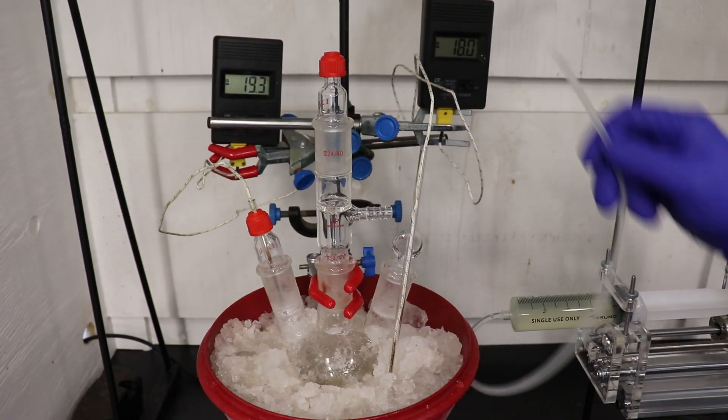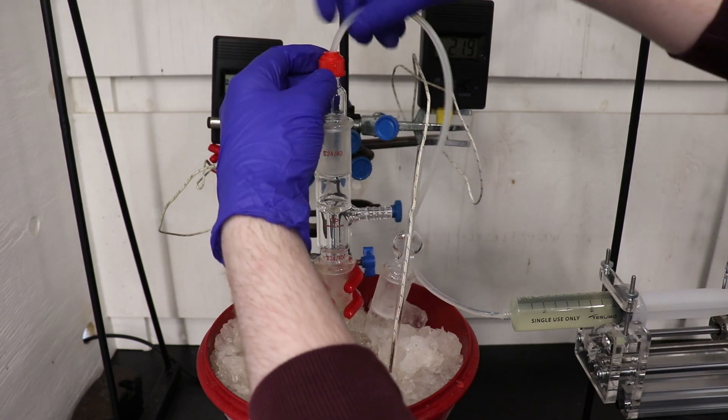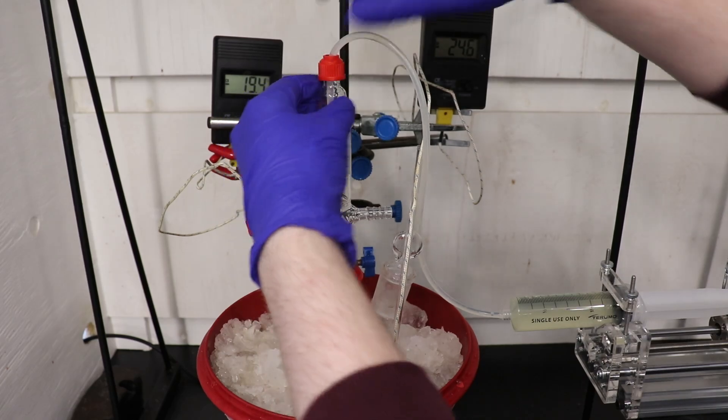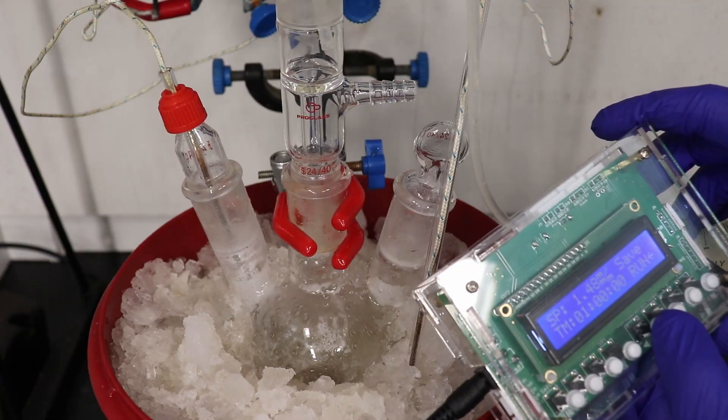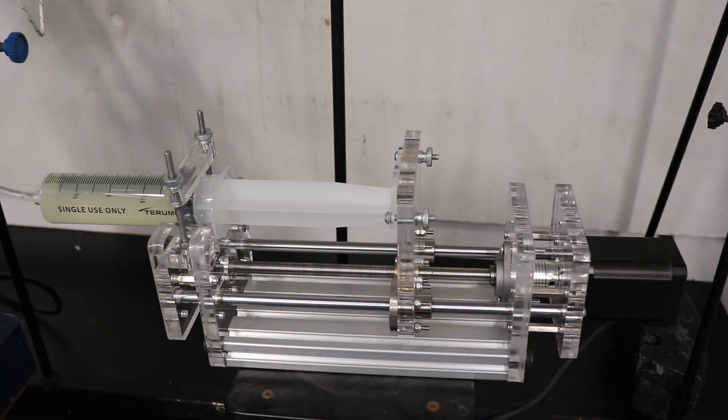Soon after, the internal temperature of the flask reached nearly negative 20 degrees Celsius. I then set up the last part of the apparatus, feeding the outlet tube of the syringe pump in through a thermometer adapter on top of the flask. I then switched on the syringe pump, so beginning the 1 hour addition of the sodium nitrite solution.